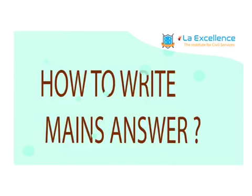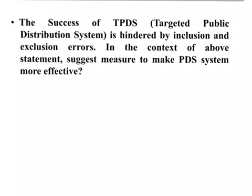Hello students, welcome to Law Excellence. In this session we will see how to write an answer for the UPSC Civil Services Mains. We will take one example and see how to write the answer. The question is: the success of TPDS, that is Targeted Public Distribution System, is hindered by inclusion and exclusion errors. In the context of the above statement, suggest measures to make the PDS system more effective.